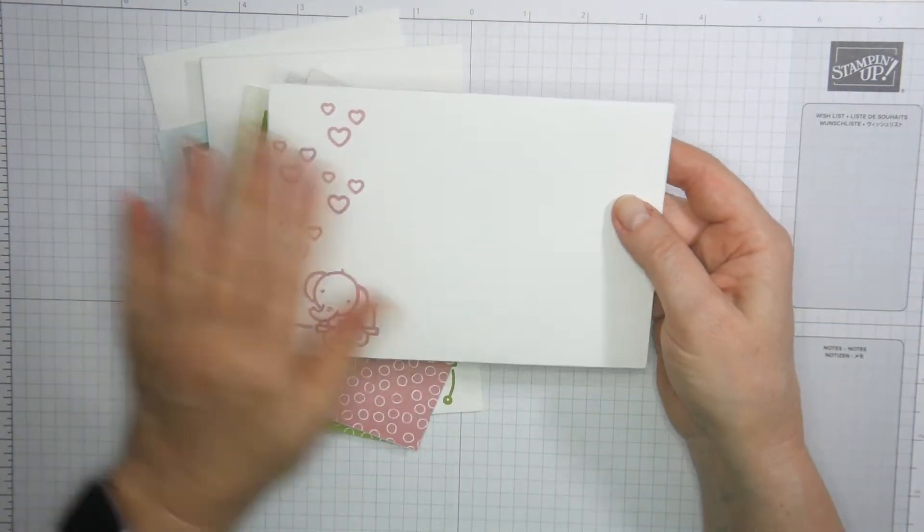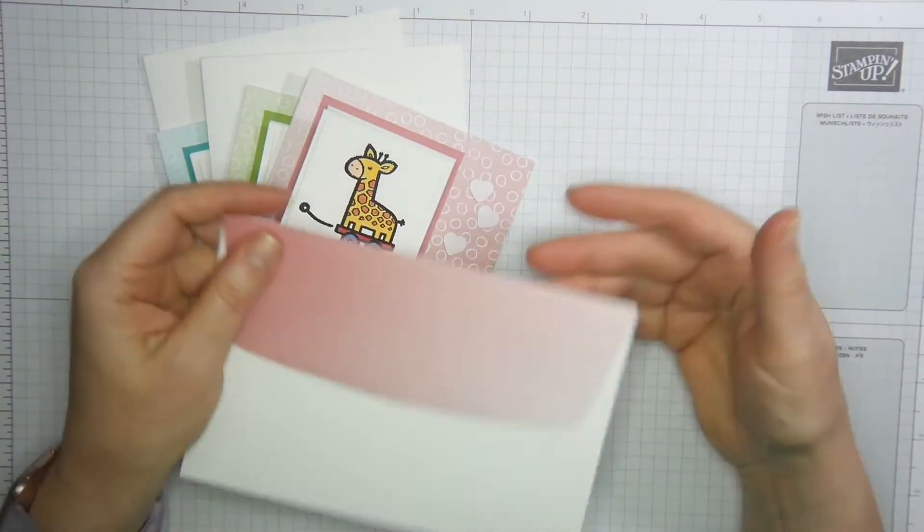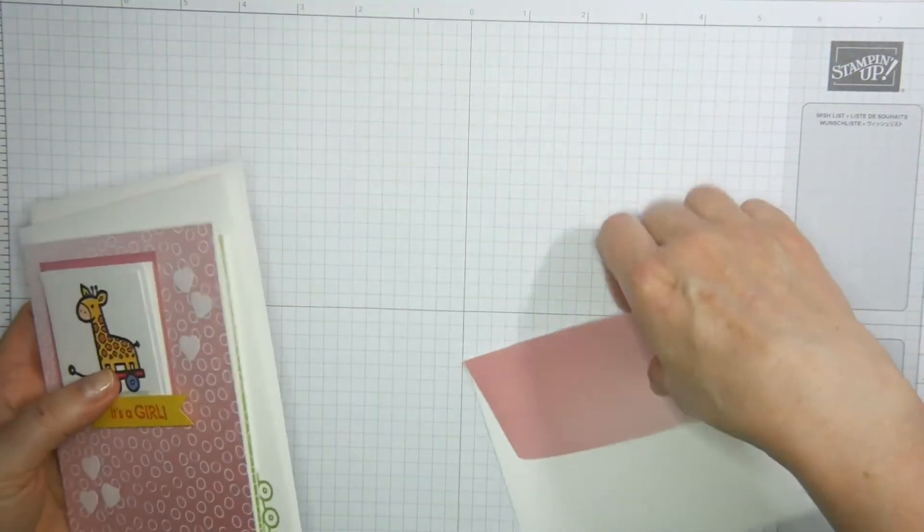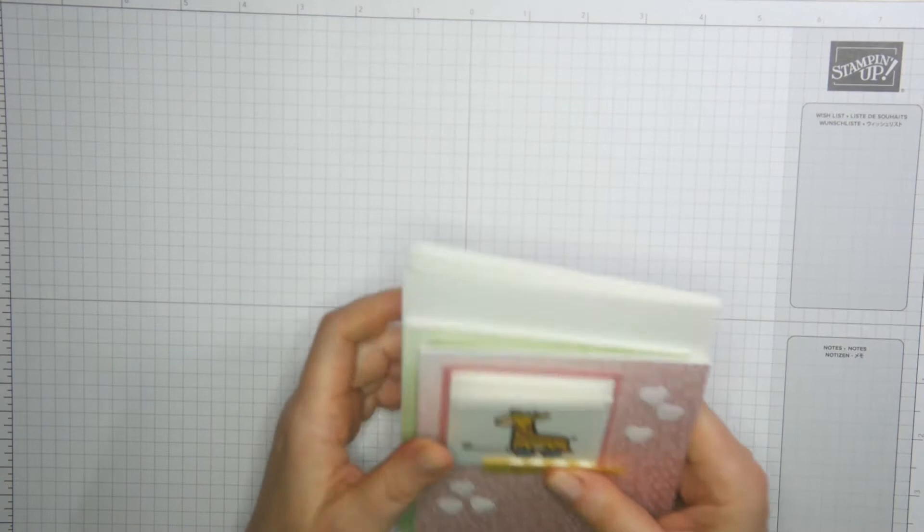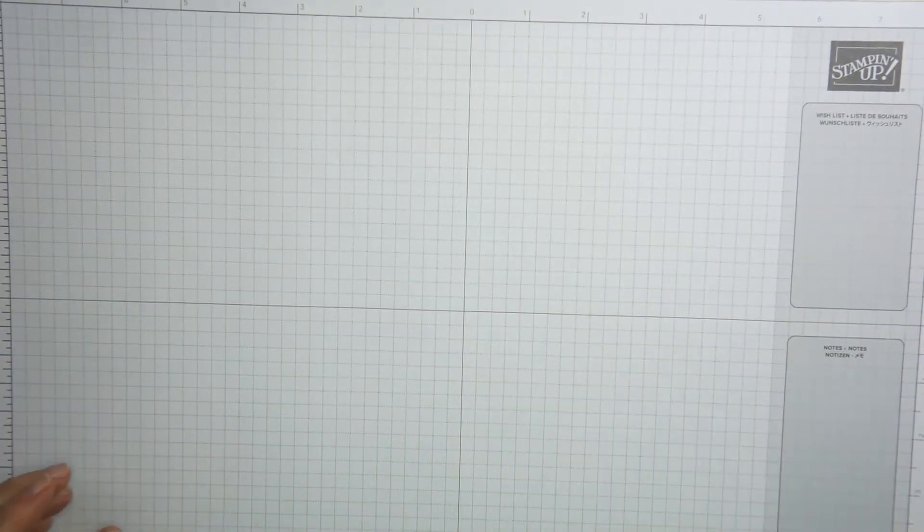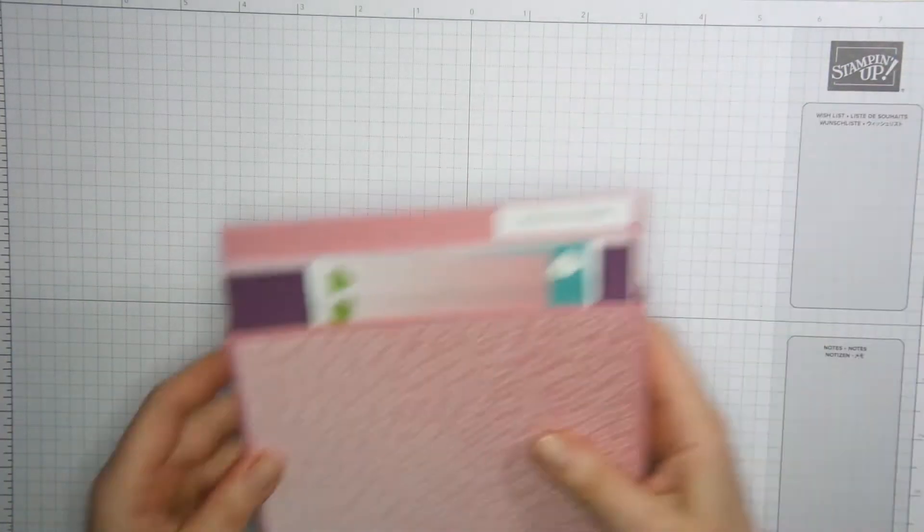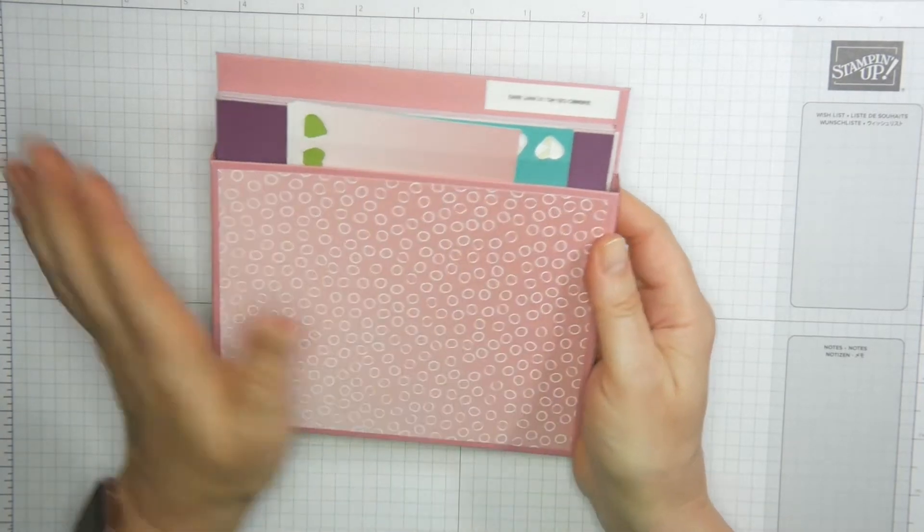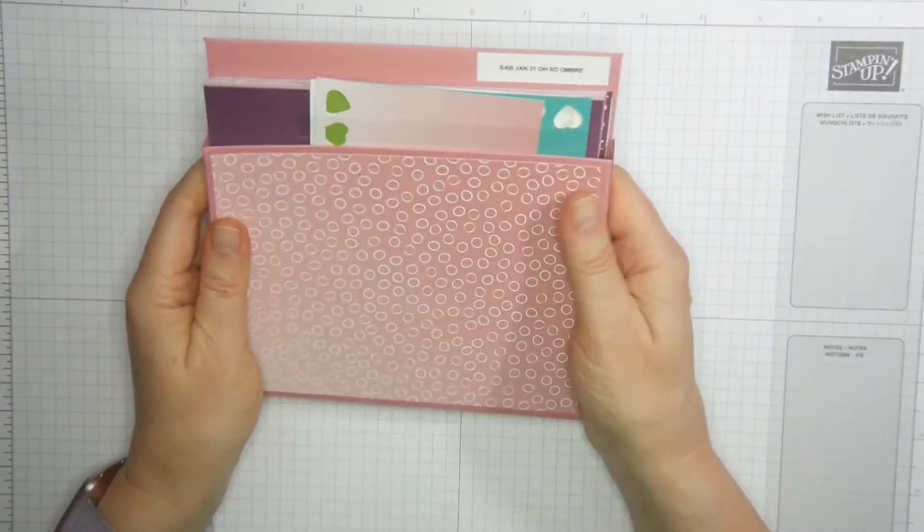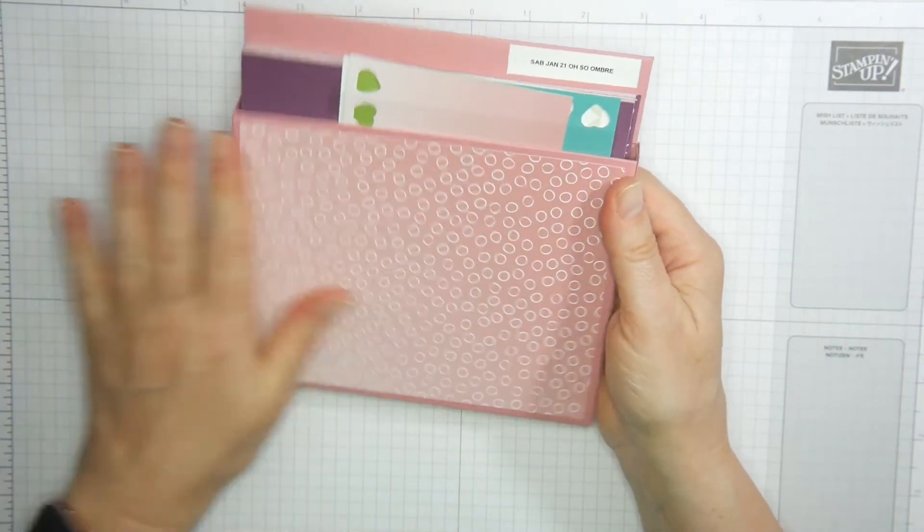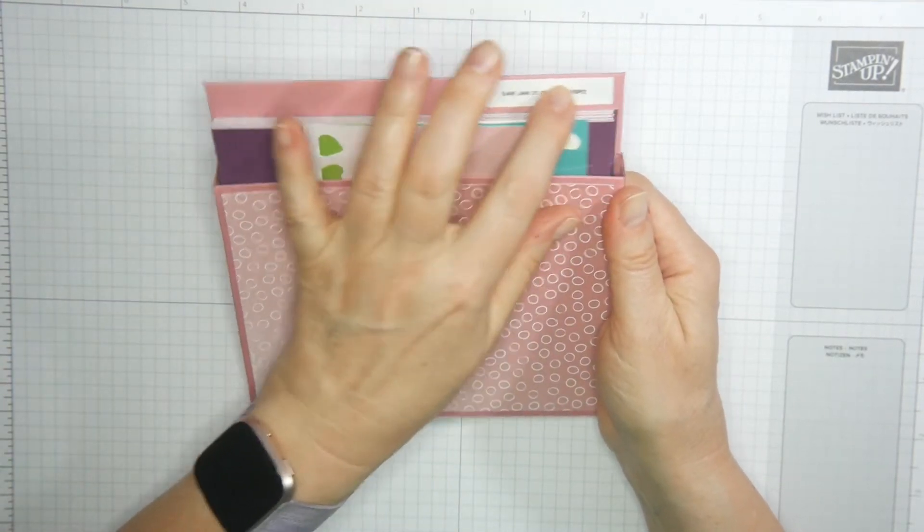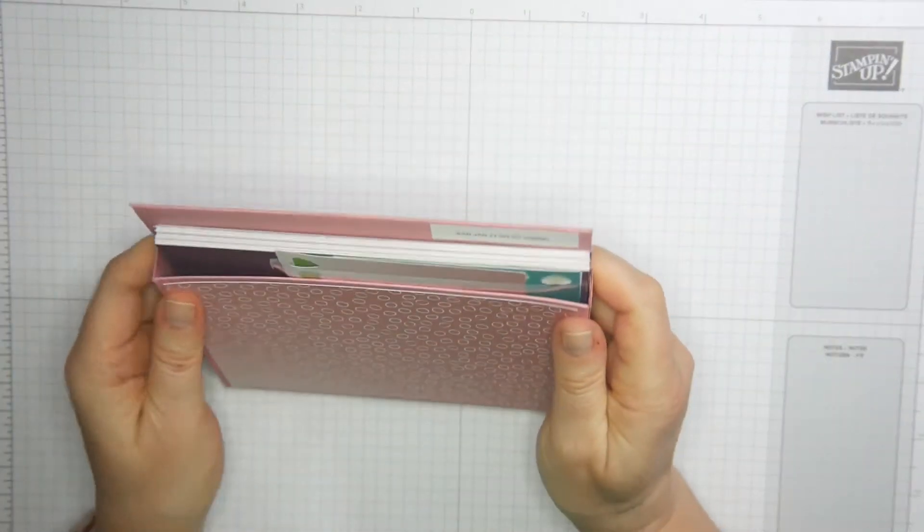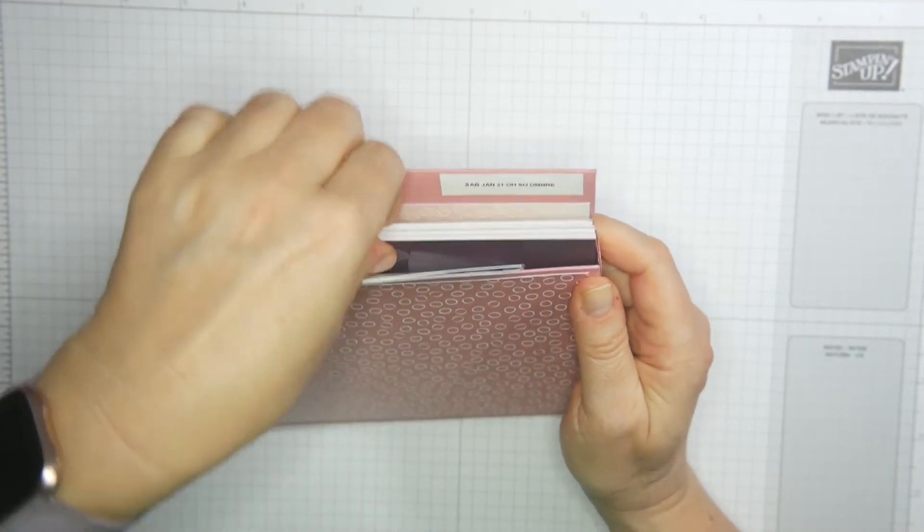I've decorated my envelopes as well. Just whisper white envelopes and some stamps. And if you want to decorate the flap, you will need an extra piece of paper. So it's up to you whether you want to go with the extra piece or not.